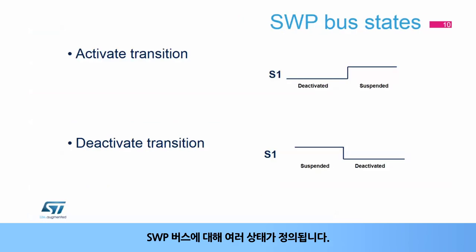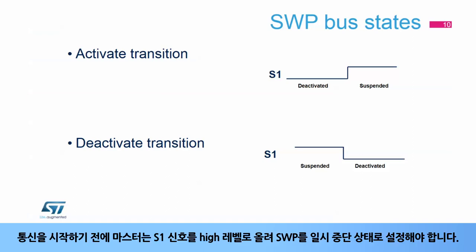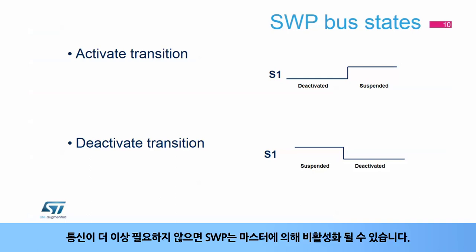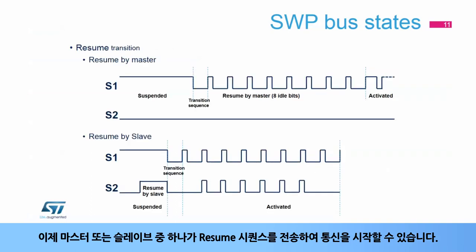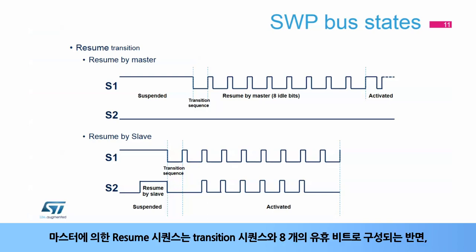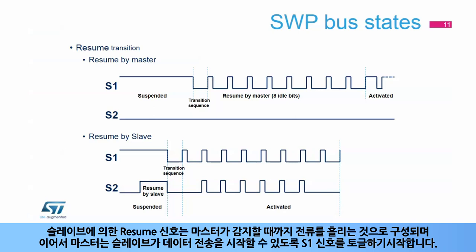Several states are defined for the SWP bus. In the deactivated state, the S1 signal is at a low level. Before starting any communication, the master must raise the S1 signal to high level to set the SWP in suspended state. Once communication is no longer required, the SWP can be deactivated by the master. Either the master or the slave can initiate a communication by sending a resume sequence. A resume sequence by the master consists of a transition sequence and 8 idle bits, whereas a resume signal by the slave consists of drawing current until the master detects it and, as a consequence, starts to toggle the S1 signal to allow the slave to start transmitting data.